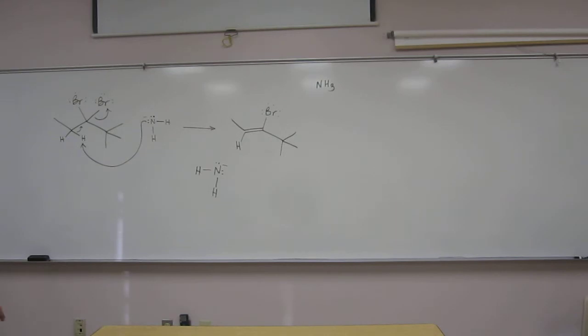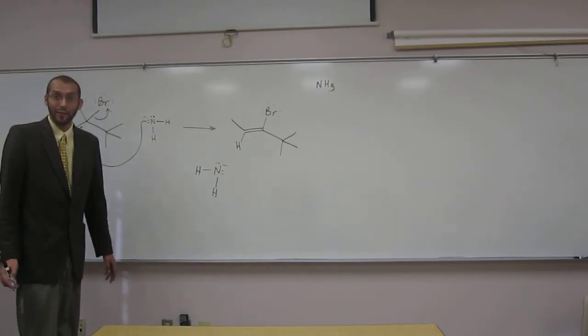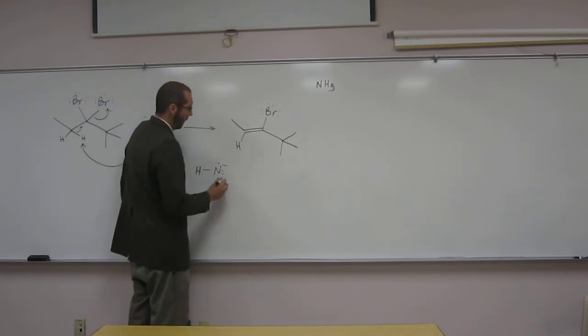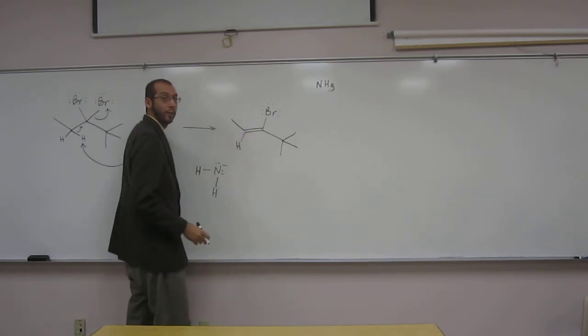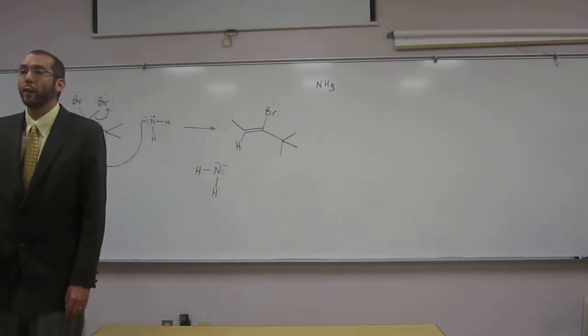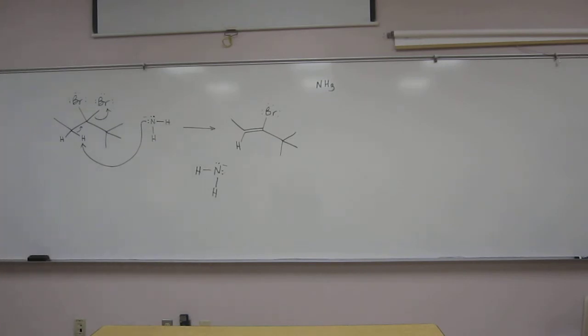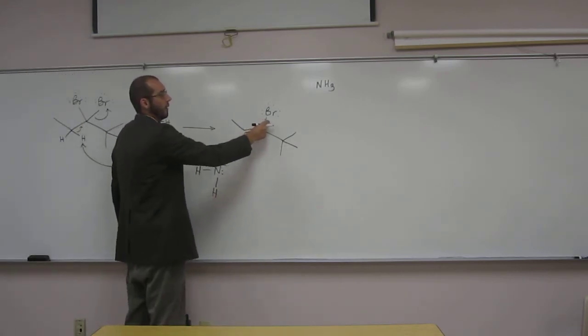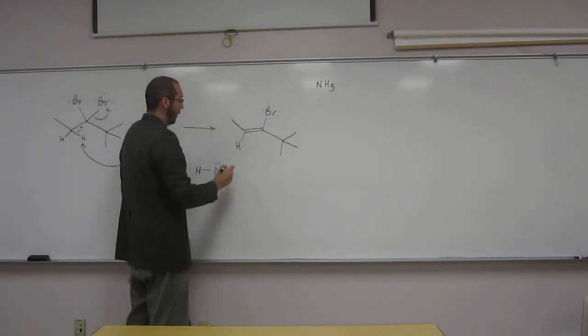Deprotonate, right? Deprotonate the acidic proton. You might think that this is a strange acidic proton. It is a strange acidic proton because it's on an alkene. Normally you wouldn't think that those are too acidic, but in this case they are. You got this atom also on the alkene. So that halogen makes this proton very acidic.